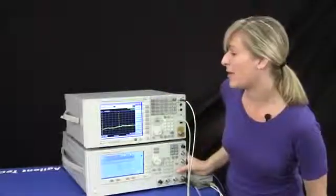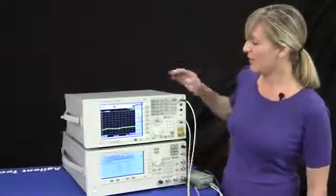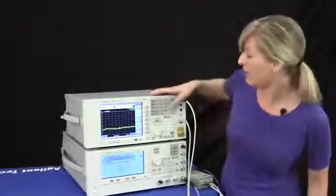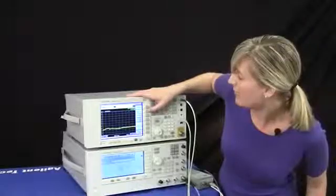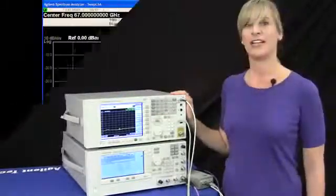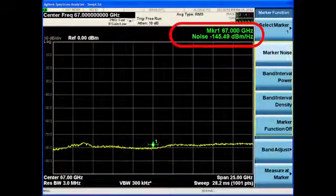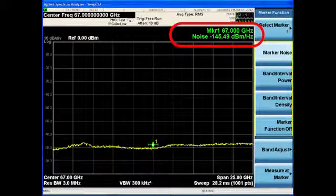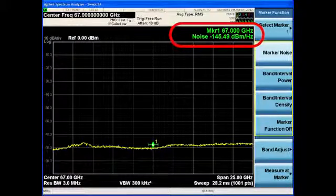I'll turn the RF off, and then I'll place a noise marker at 67 GHz. And as you can see, we're showing a noise floor reading of negative 145 dBm per Hz at 67 GHz.